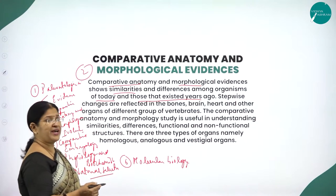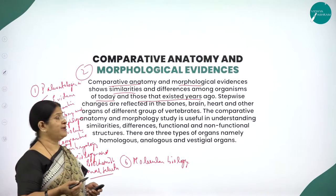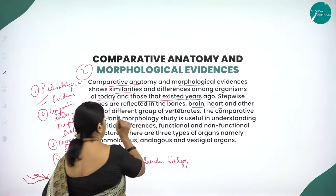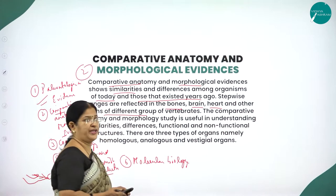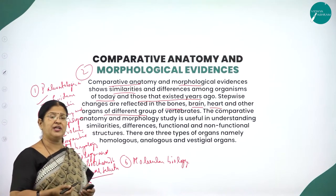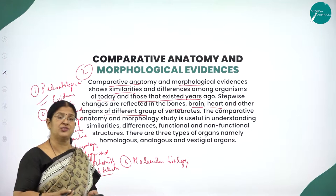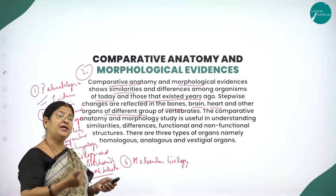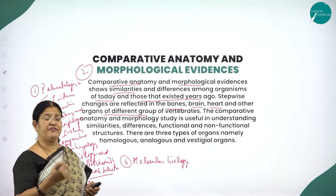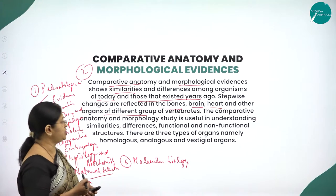So there are stepwise changes reflected in the anatomy of the bones, the brain, heart and other organs of different groups of vertebrates. When we do the comparative study, we get to know how the present day organisms have evolved from the past organisms. Comparative anatomy and morphological study helps us understand this very important process called evolution.